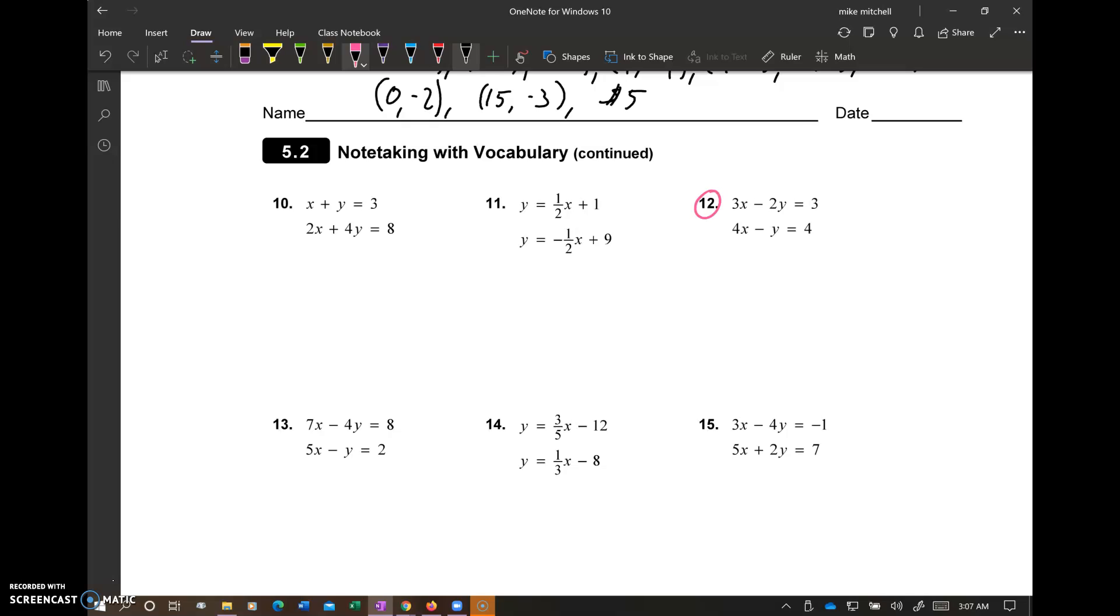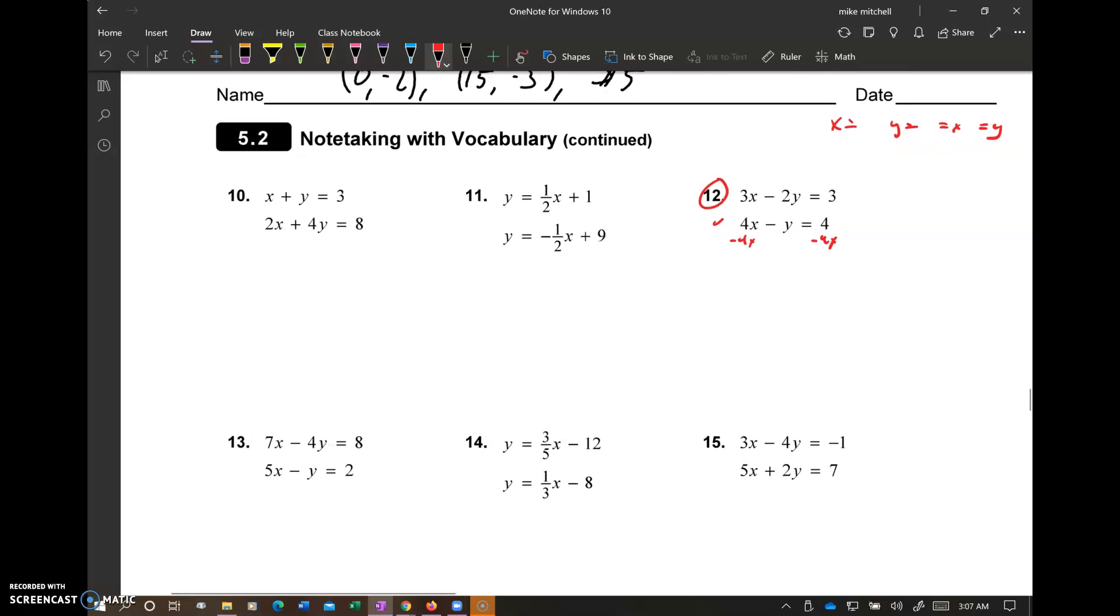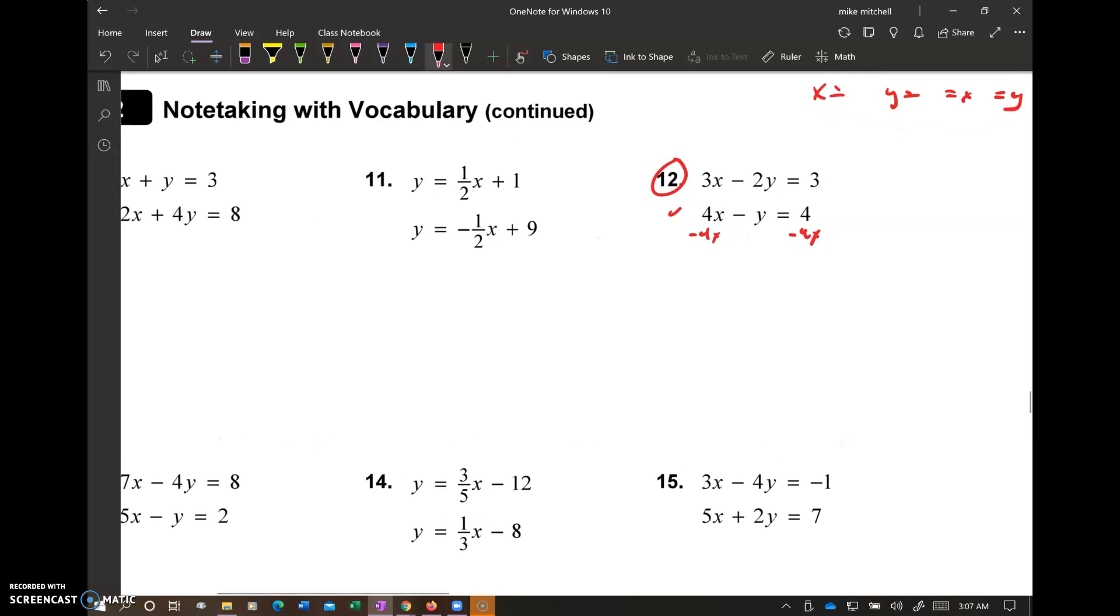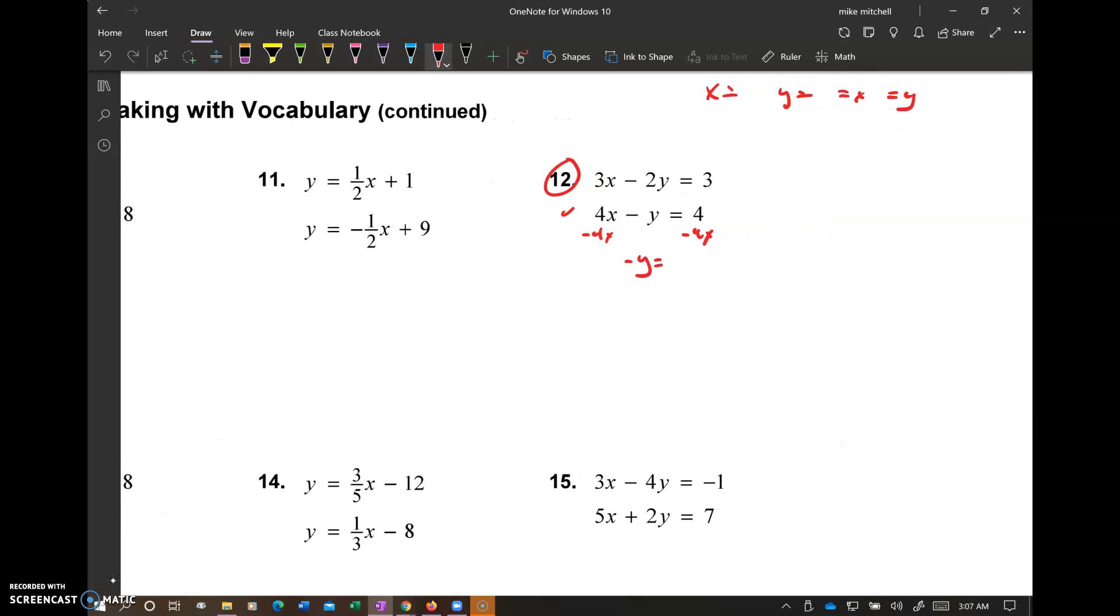So let's take a run through this one here and see what we can do. I'm going to look at number 12 here first. So these on the first page, we don't have an x equals, a y equals, and equals x, and equals y. So we've got to set this up. On 13, I'm going to look at the second problem because this y looks like the simplest thing I have there. So minus 4x minus 4x, negative y equals negative 4x plus 4, divide by negative 1, y equals 4x minus 4.